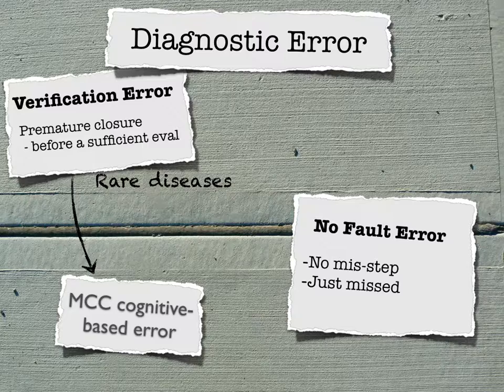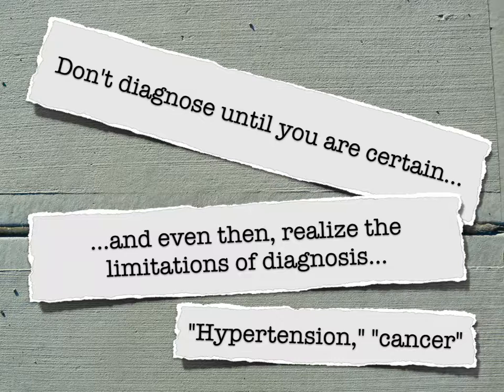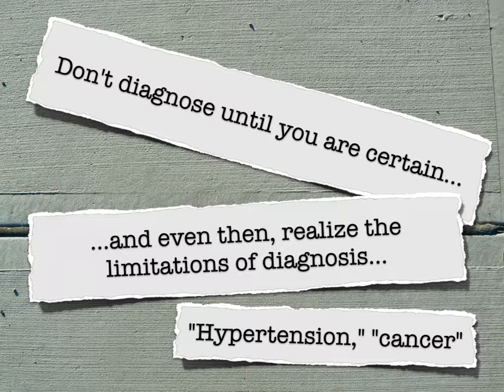That leads us to the notion of beyond diagnosis. This was an article in the Annals of Internal Medicine in 2008 by Andrew Vickers. He said: don't diagnose until you are certain, and even then realize the limitations of diagnosis — particularly in things like hypertension and cancer. Just because we diagnose those based on numbers doesn't necessarily tell us everything about the patient's prognosis. Even in diseases where we have a pretty well-established idea of prognosis, say 15% of people go on to develop heart attacks, that just gives you a general idea for a whole population. You still have to look at the patient in front of you and try to make an educated guess about their risk of having a bad outcome.